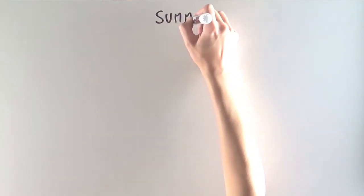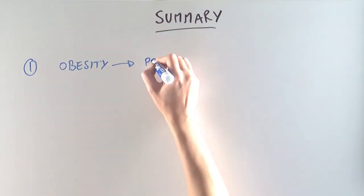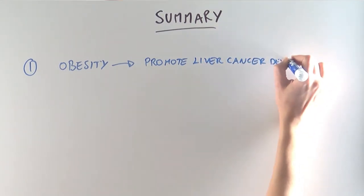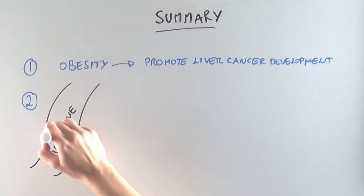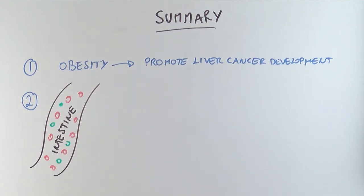So what did this study show? First, this study shows that obesity can promote liver cancer development. Second, the scientists take this a step further to describe a mechanism by which this can happen. It goes like this: Obesity alters the types of bacteria that reside in the intestine.